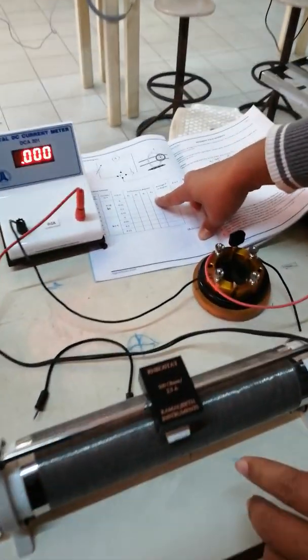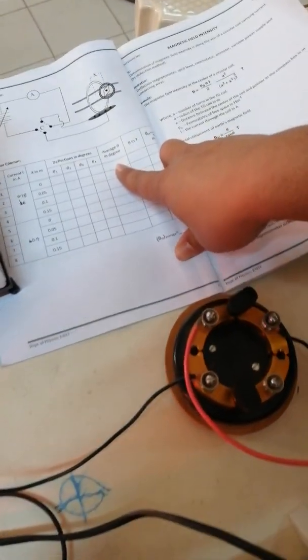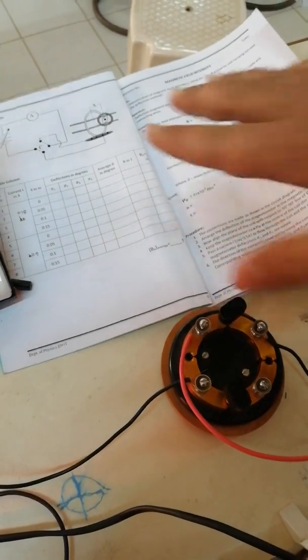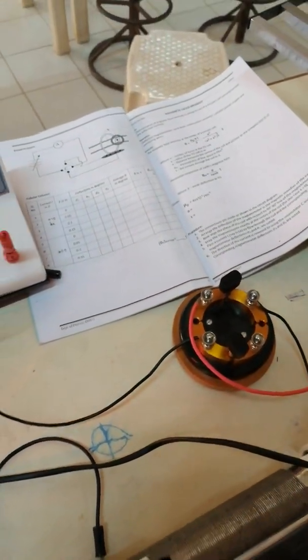And at last we do the average of theta, then calculate B in Tesla, and then we conclude the experiment. That's all for the experiment of magnetic field intensity.